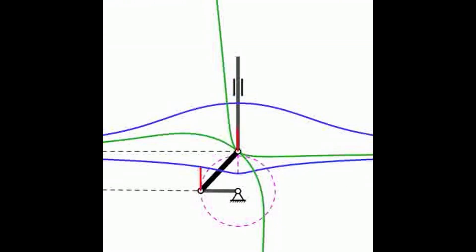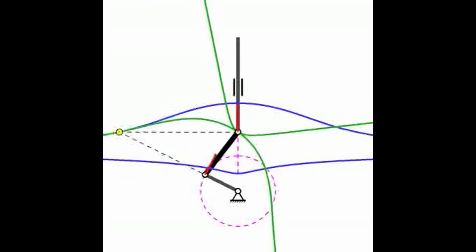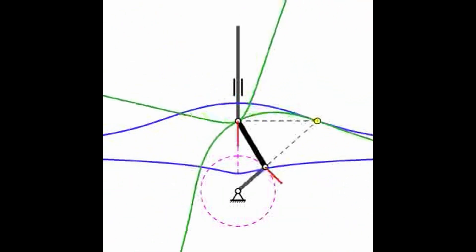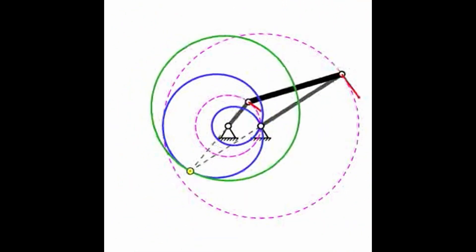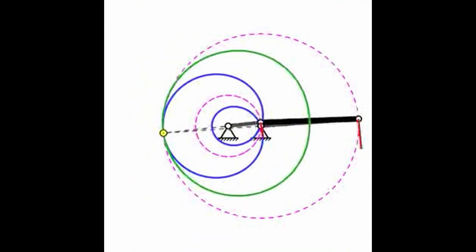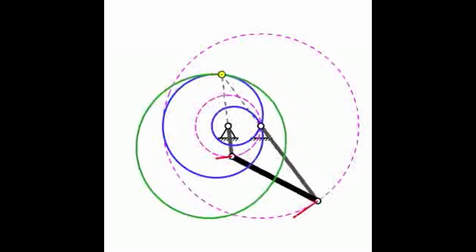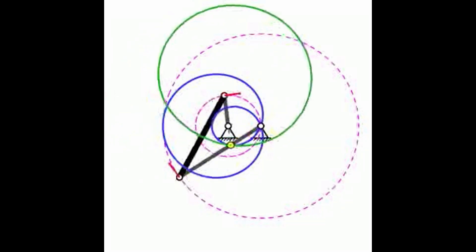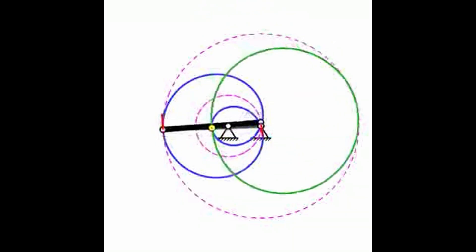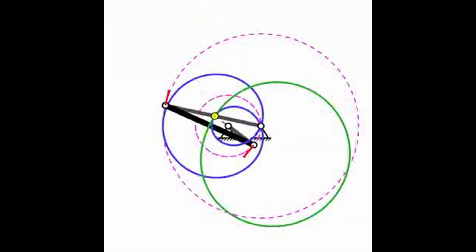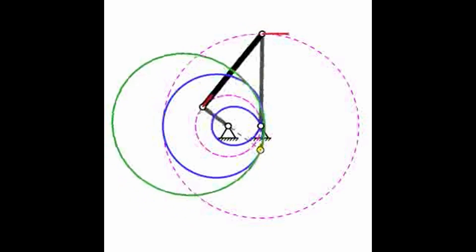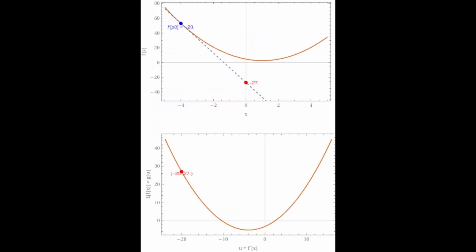Projective varieties are defined similarly but in projective space; they capture the points satisfying homogeneous polynomial equations. Quasi-projective varieties are obtained by removing a hyperplane from a projective variety. General varieties are constructed by patching together smaller quasi-projective varieties, and certain examples show that genuinely new varieties can arise this way.